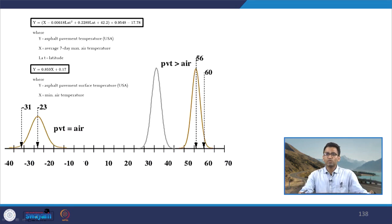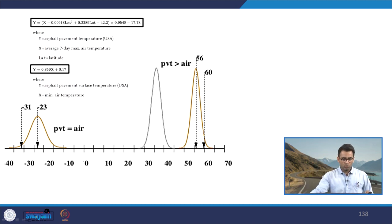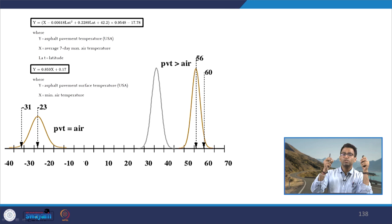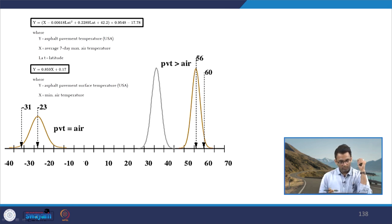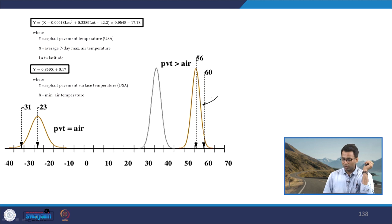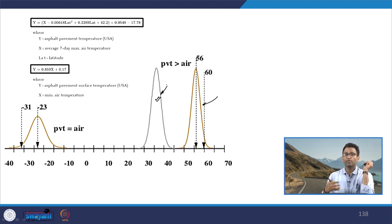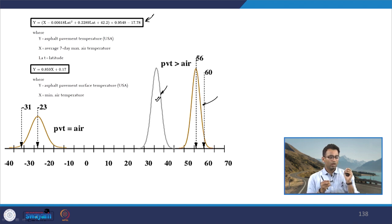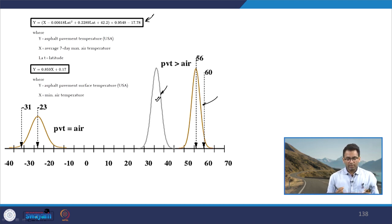The superpave grading system also gives an opportunity to select the binder based on target reliability. Temperature at a location cannot be constant — even the lowest daily temperature will have a distribution. Here we have two extremes for a particular location in the US. There are models available — one model shown here lets us find the asphalt pavement temperature based on latitude and the average 7-day maximum air temperature. In India, similar location-specific models could be developed.